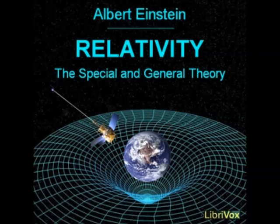We are therefore not in a position to define exactly the coordinates X, Y, Z relative to the disk by means of the method used in discussing the special theory, and as long as the coordinates and times of events have not been defined, we cannot assign an exact meaning to the natural laws in which these occur. Thus, all our previous conclusions based on general relativity would appear to be called in question. In reality, we must make a subtle detour in order to be able to apply the postulate of general relativity exactly. I shall prepare the reader for this in the following paragraphs.